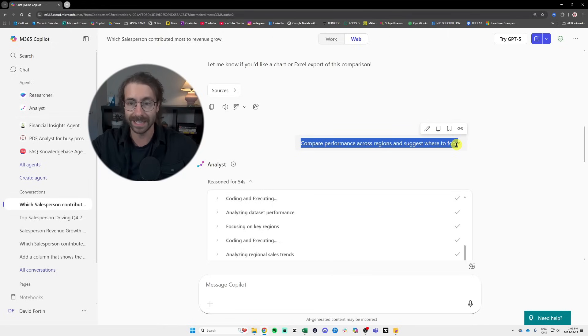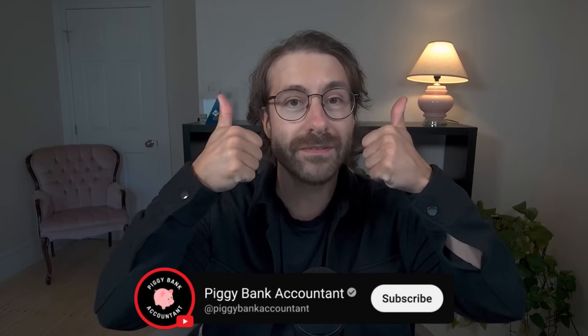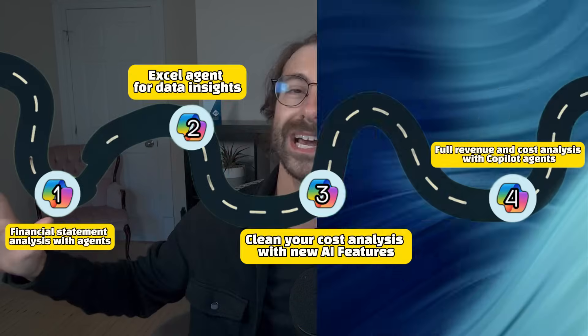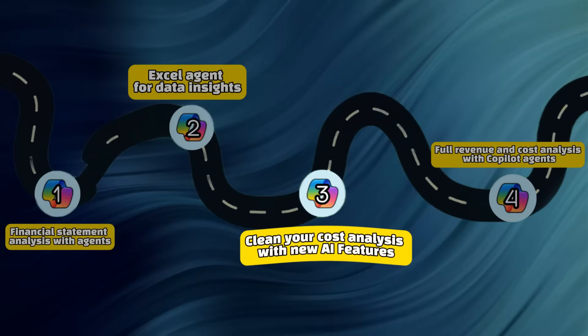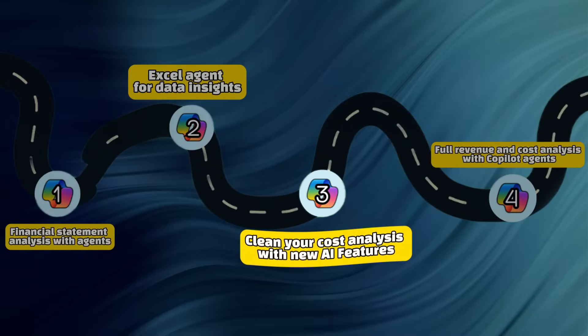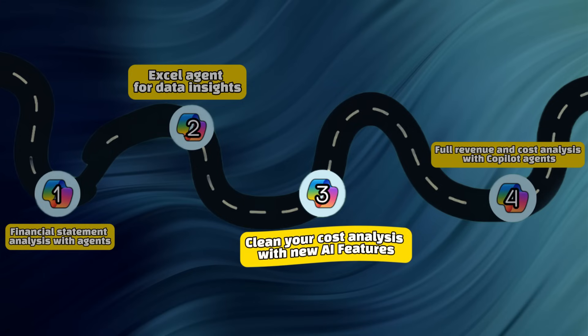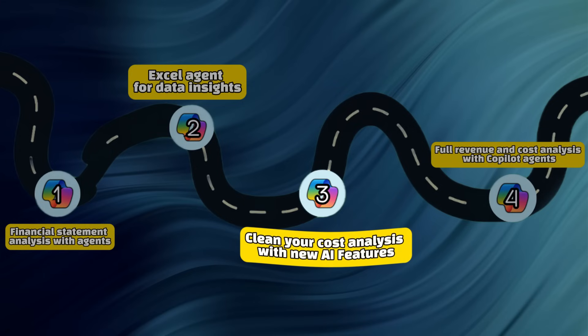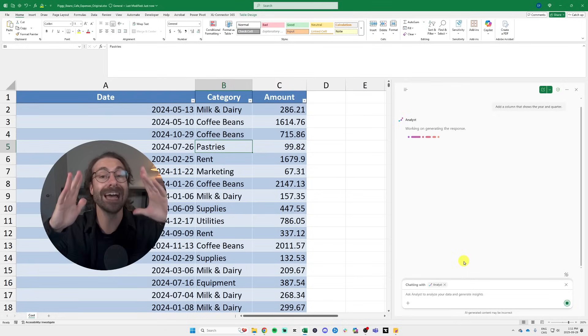If you enjoyed this video so far, make sure you give it a big thumbs up. In the third example of this video, we are still in the Piggy Beans Cafe dataset, but we are looking at costs. I have a very basic dataset with dates, categories, and amount.